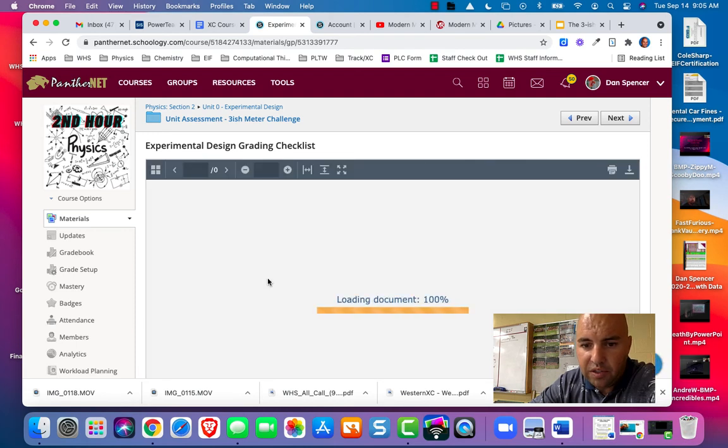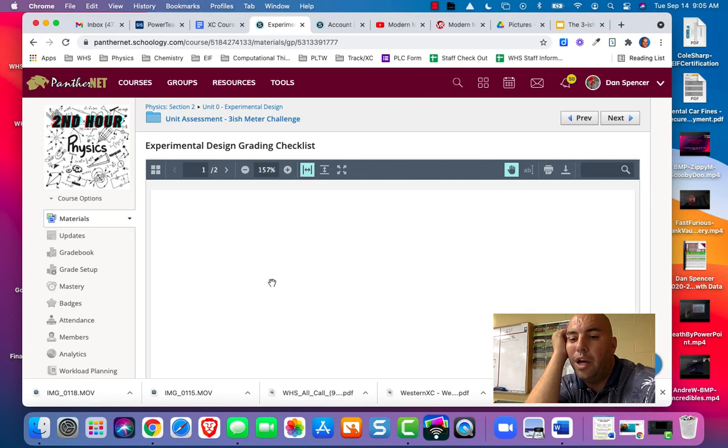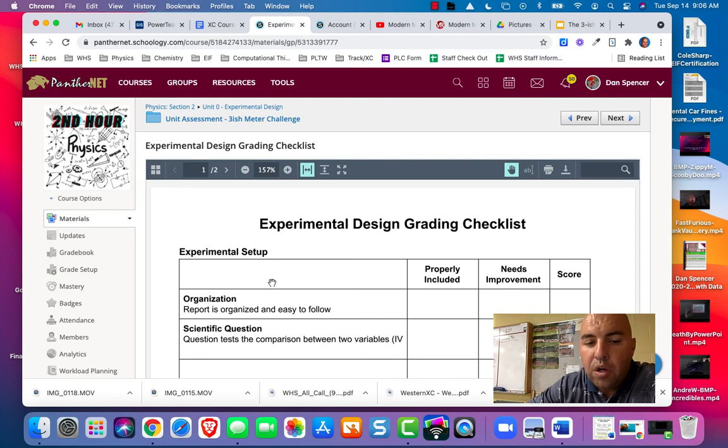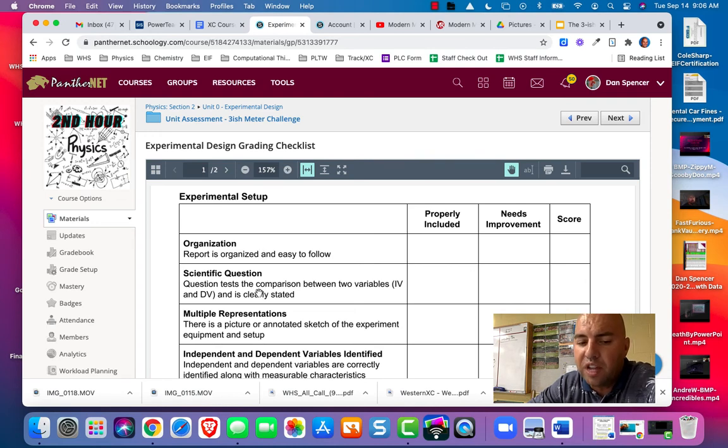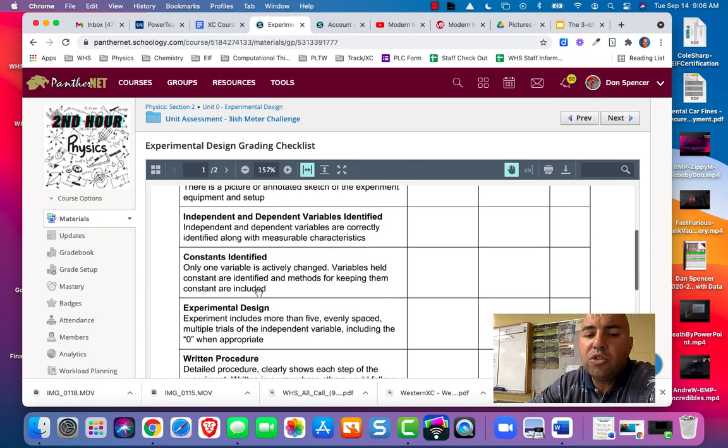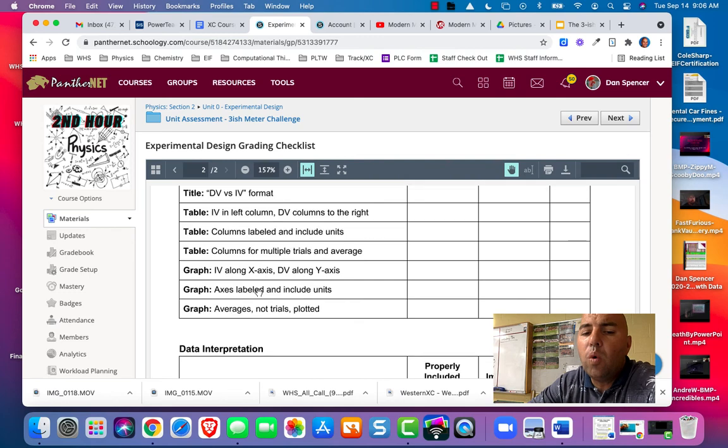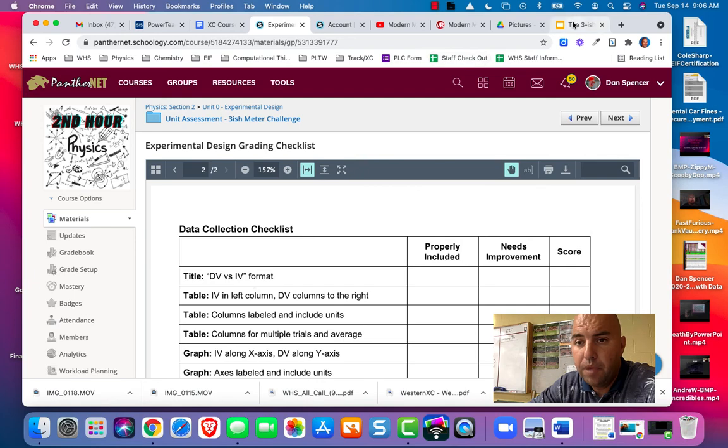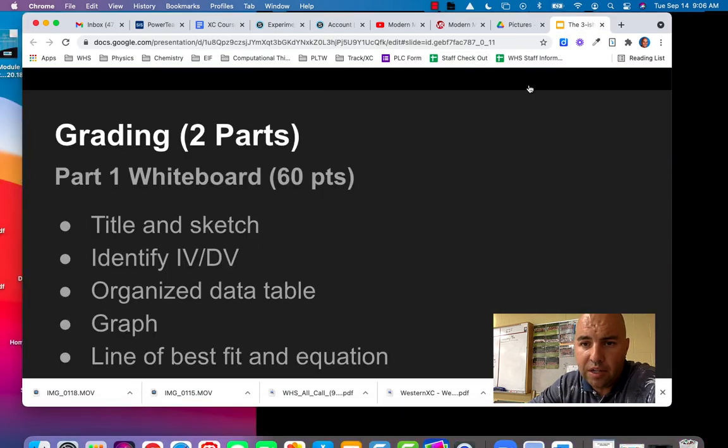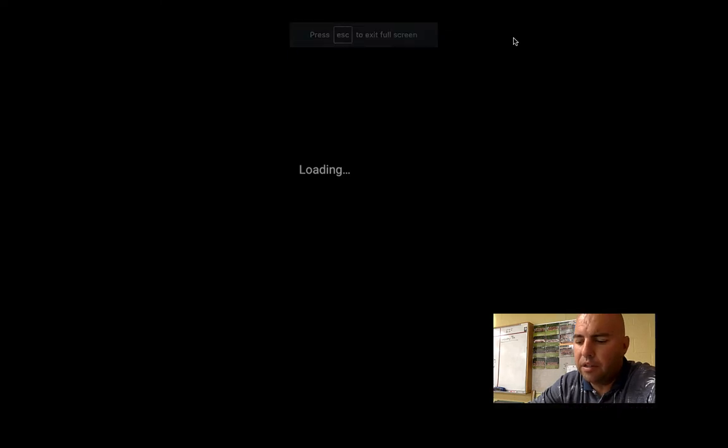It shows you all the little pieces that I am looking for here. So for example, organization report is organized and easy to follow. Scientific question. Question tests the comparison between two variables and is clearly stated. There is a picture or annotated sketch. It goes through all the stuff that you need to have. Once again, you should know what your grade is before you actually turn it in. So that's the first part. That's the part that is going to be on, or that you're going to do before you even test the bounce height.